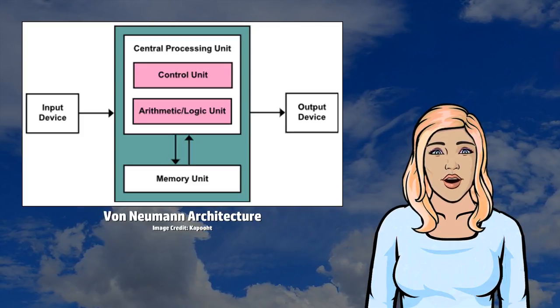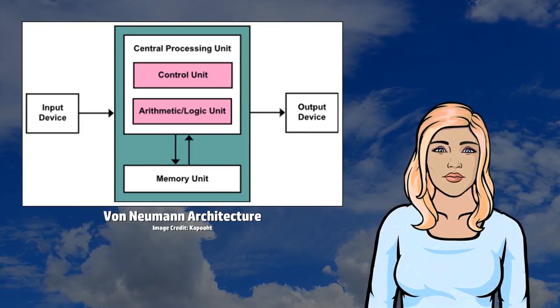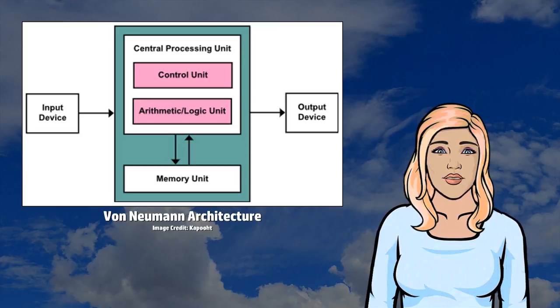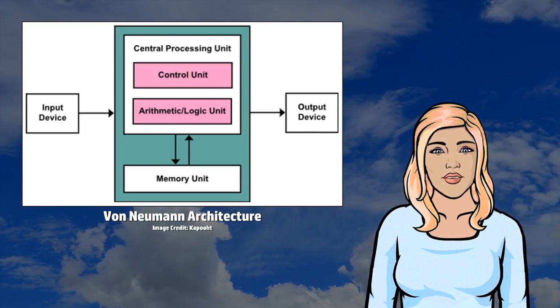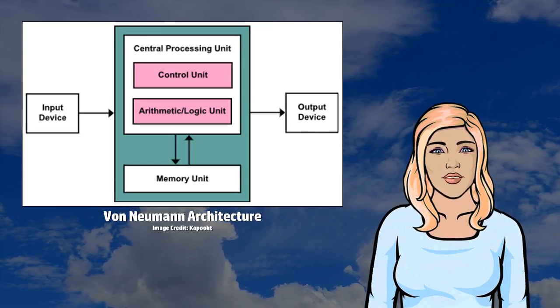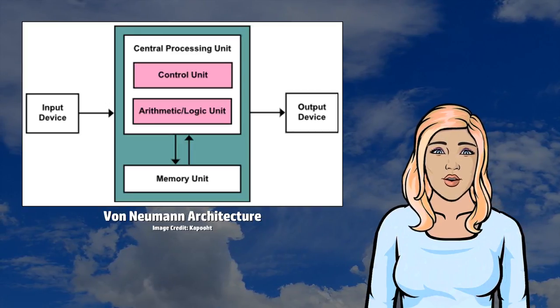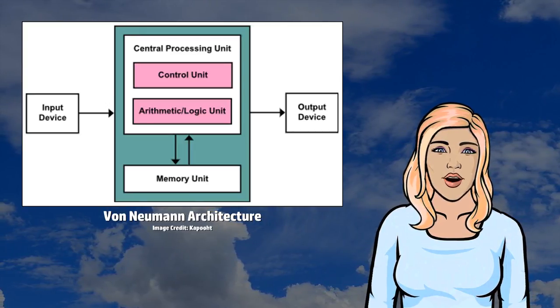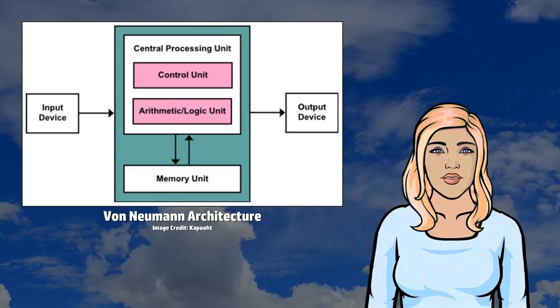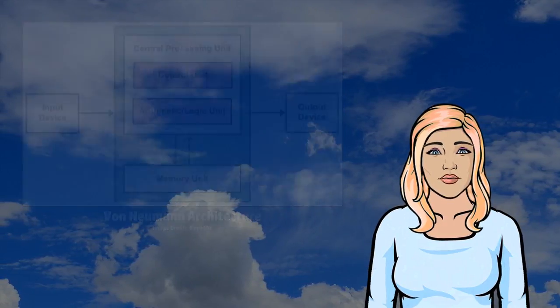This describes a designed architecture for an electronic digital computer with subdivisions of a processing unit consisting of an arithmetic logic unit and processor registers, a control unit containing an instruction register and program counter, a memory to store both data and instructions, external mass storage, and input and output mechanisms.